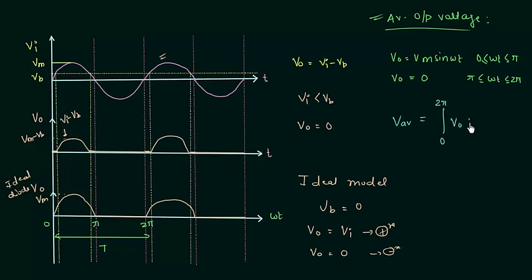Now I will derive the expression for average load current. Average load current I_average equals V_average divided by R, where R is the load resistance. V_average equals Vm/π divided by R, so this equals Vm divided by R·π. Since Vm divided by R is Im, the maximum value of load current, we have I_average equals Im divided by π. In summary: the average output voltage is 0.318·Vm and the average load current is Im divided by π.